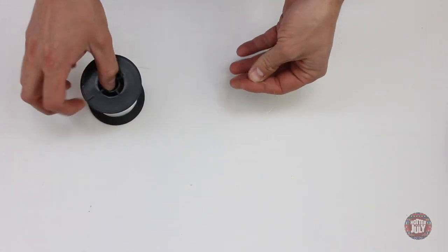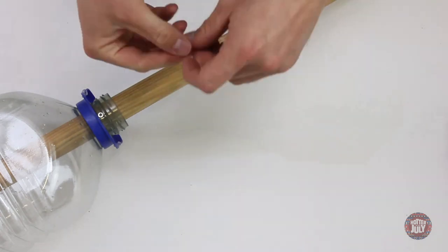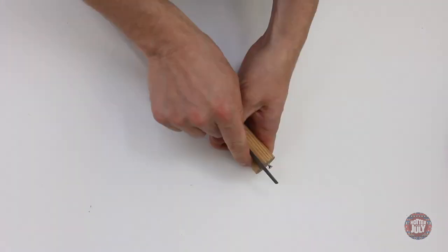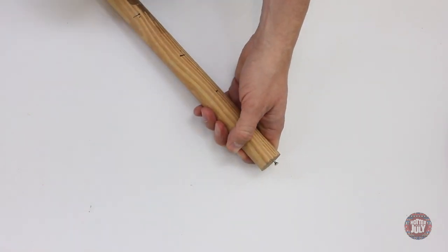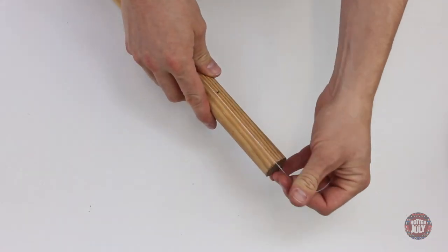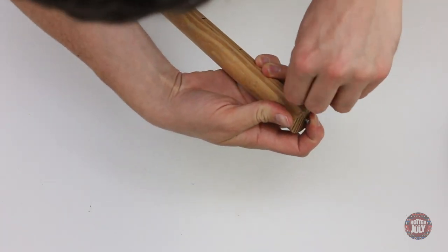Measure out a length of fishing line for the string. Tie a loop at one end of this and pull it over the body end screw. File or otherwise indent a small groove for the string to sit in at the other end of the stick and with the string roughly tensioned, wrap it a few times around the end screw before tying with a double knot.